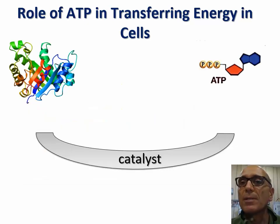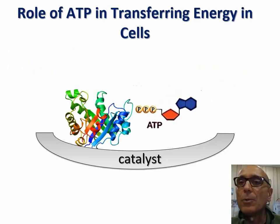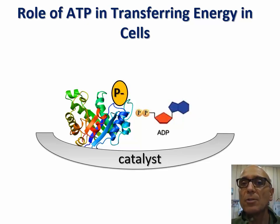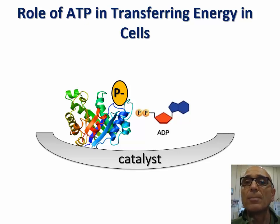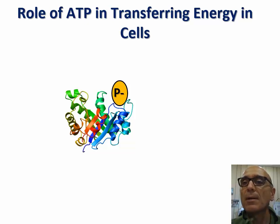Let's take the example of protein phosphorylation to illustrate this energy transfer by ATP. With the help of a biological catalyst, better known as an enzyme, ATP loses a phosphate group to a protein molecule. The inorganic phosphate becomes covalently attached to the protein, adding a negative charge to the protein, thus raising the potential energy of the complex formed. In other words, the phosphorylation of a protein molecule causes the activation of the protein, increasing the likelihood that it would interact with other molecules.